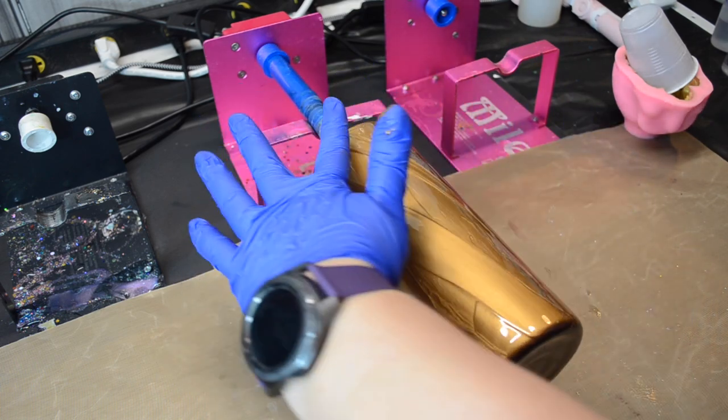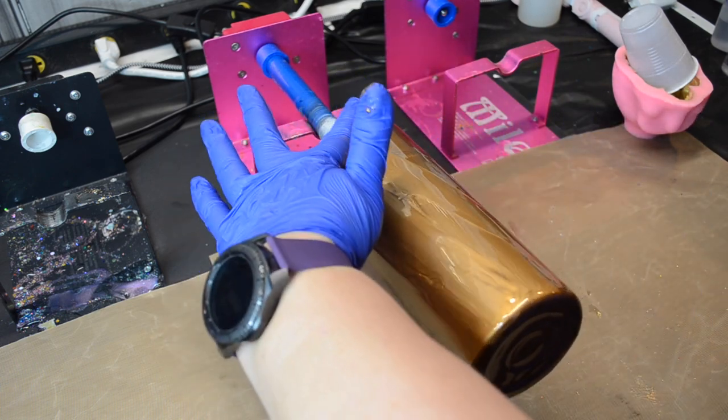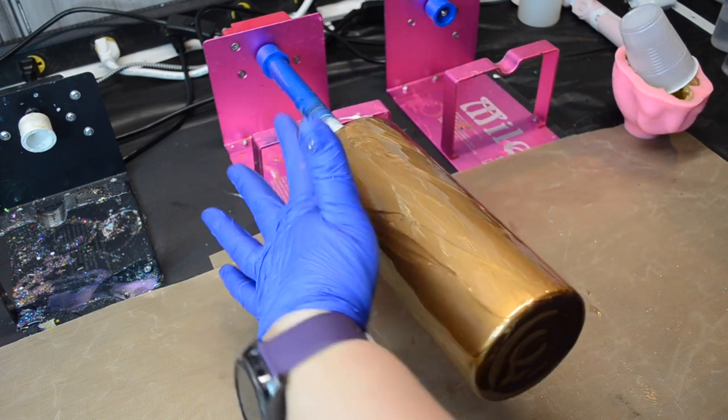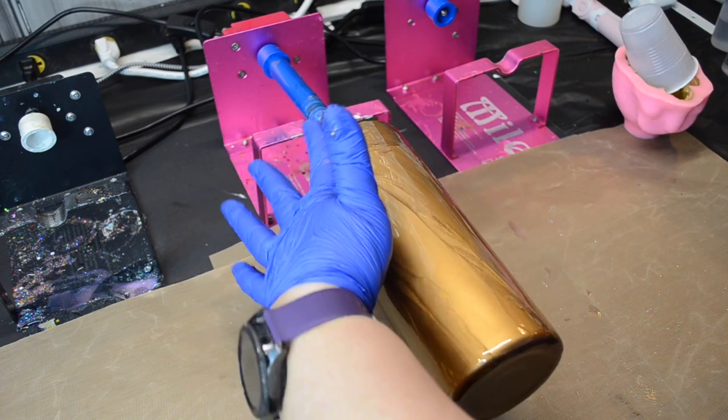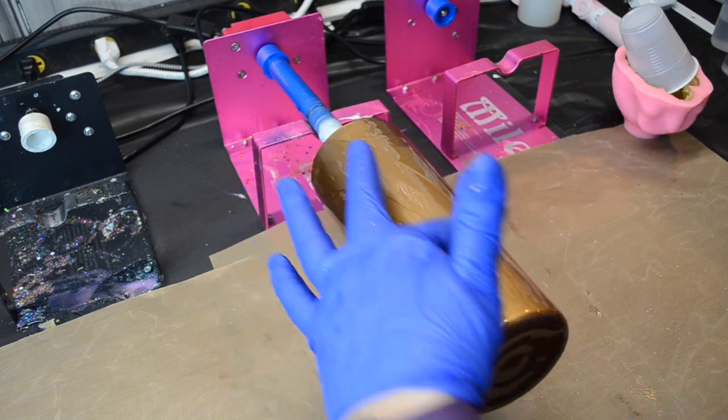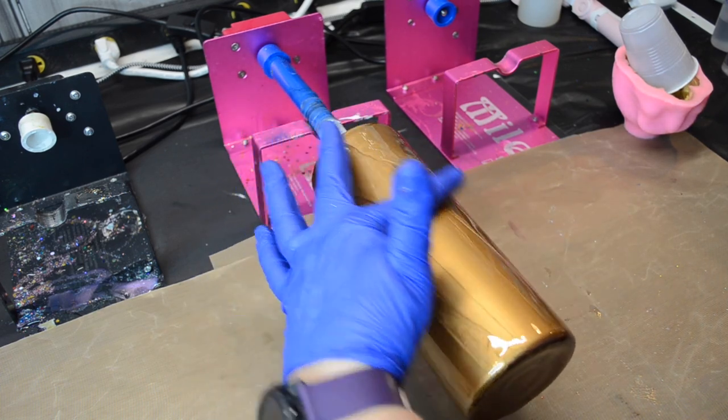I'm just rubbing my finger down in a swirl pattern to break up some of those lines. By adding the heat to the cup, it will allow that mica and resin to kind of move, and all those lines kind of work themselves out as the cup turns.